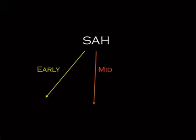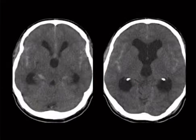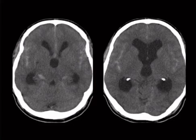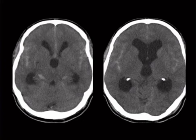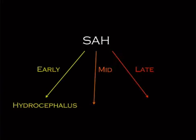Subarachnoid hemorrhage has three complications that occur at different times, making it highly testable. Early on, the patient comes into the ER with the worst headache of their life, and you'll often see hydrocephalus. Why? The blood obstructs the absorption of CSF. So hydrocephalus is your early side effect.